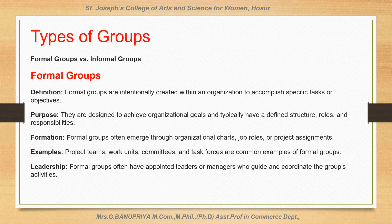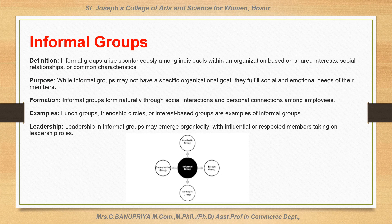Types of groups. There are formal and informal groups. Formal groups are intentionally created within an organization to accomplish specific tasks or objectives. For example, team projects, work units, committees and task forces are common examples of formal groups. Informal groups may not have a specific organizational goal, but they fulfill the social and emotional needs of their members. Examples of informal groups include lunch groups, friendship circles and interest-based groups.